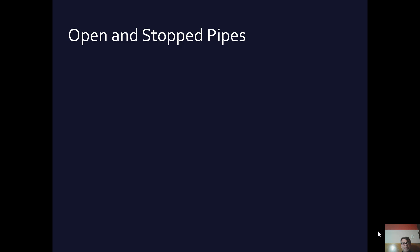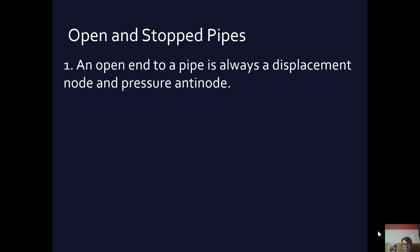Let's talk about open and stopped pipes. An open pipe is open on both ends. A stopped pipe is closed on one end but open on the other. Think of wind instruments like oboes, clarinets, and flutes — these are various kinds of pipes. An open end on a pipe is always a displacement node and a pressure antinode. The pressure is greatest at the open end, and therefore the displacement of the sound is zero there. For an open pipe, the displacement is zero on both ends because pressure is maximum on both ends.